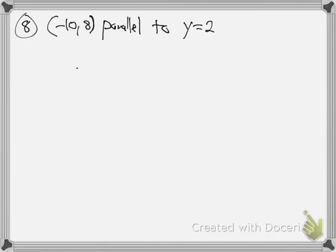Here we are in the second part of 8.1, section 8.1 part 2. They want me to come up with the equation of a line, y equals mx plus b, that goes through this point and is parallel to y equals 2.